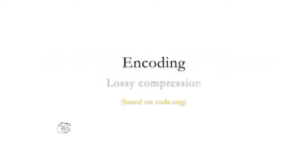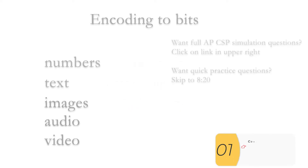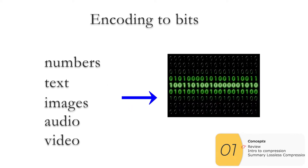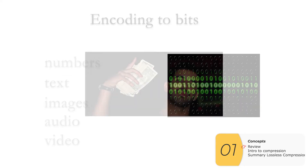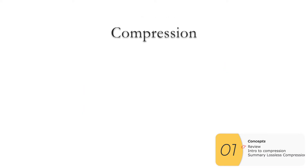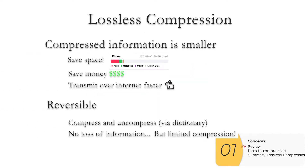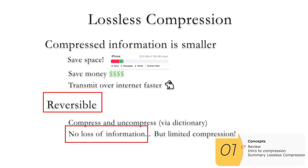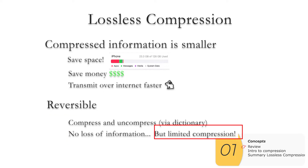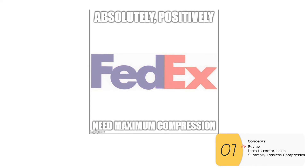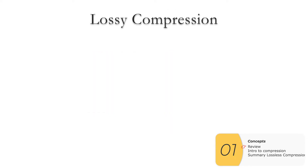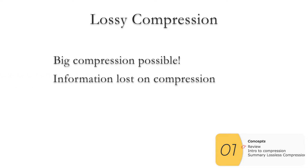In this video we're going to look at lossy compression. As a review, we learned about encoding, which takes things from the human world and transfers them to the computer world. The computer stores things in bits, but bits cost money, so we learned about compression to store the same information with fewer bits. We saw lossless compression, which is reversible with no loss of information, but it has limited compression capabilities. When you absolutely need maximum compression, you use lossy compression, which gives big compression at the cost of losing information permanently.